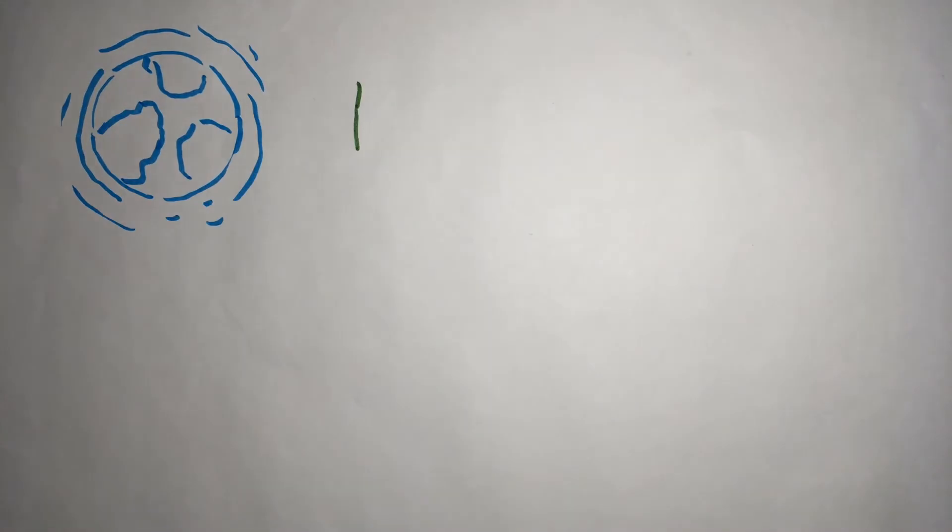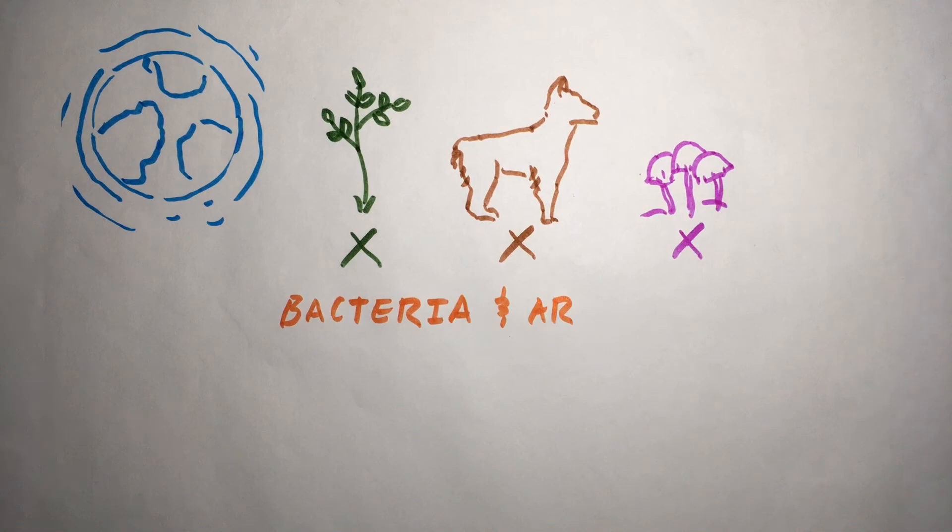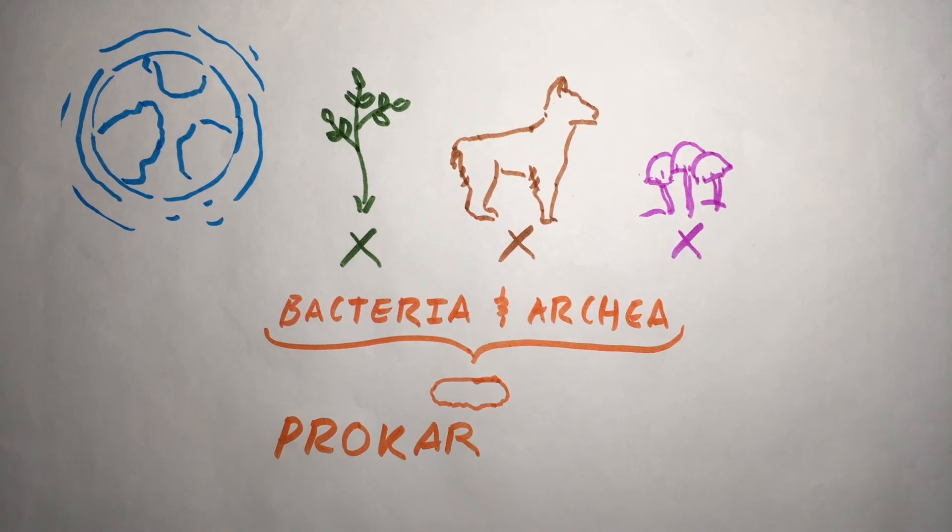Most of the cells living on this planet are not plants, animals, or fungi, but rather microorganisms called bacteria and archaea. Together they make up the prokaryotes.